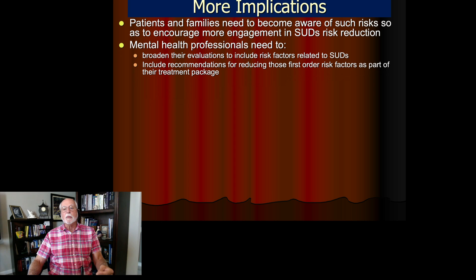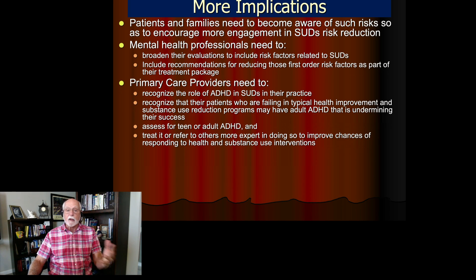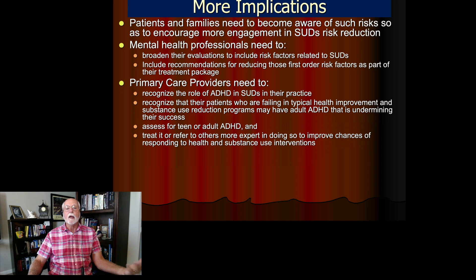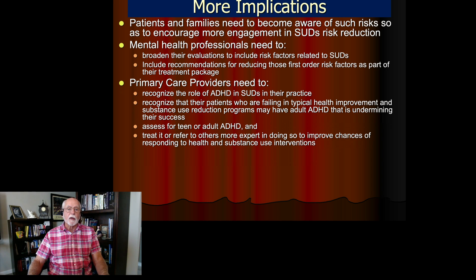Patients and families need to be made more aware of the risk that ADHD poses for substance use problems. Mental health professionals need to be more aware of this comorbidity — when they see individuals with substance use difficulties, they should be more likely to evaluate them for adult ADHD, and vice versa: when you see ADHD individuals, keep in mind there could be an increased likelihood of substance use problems. Primary care providers also need to be aware of this comorbidity, as they may be overlooking one of the major factors contributing to their patients' substance use problems.